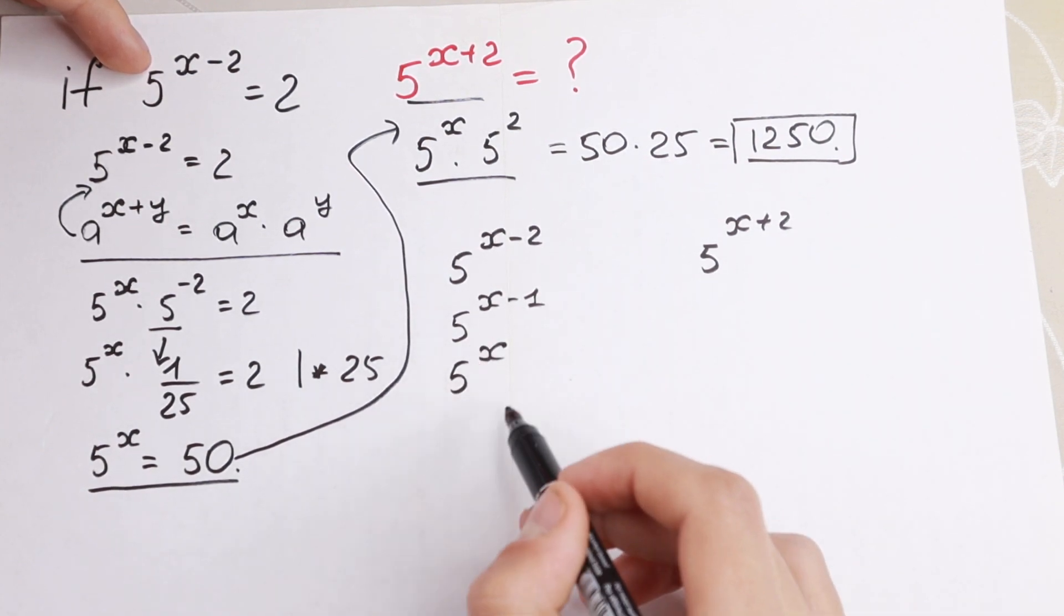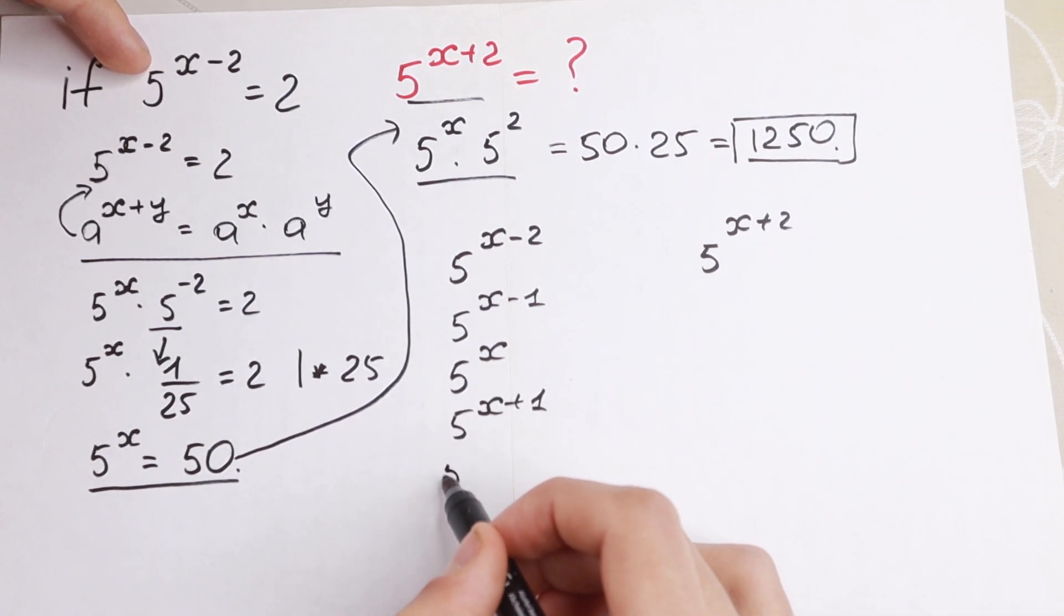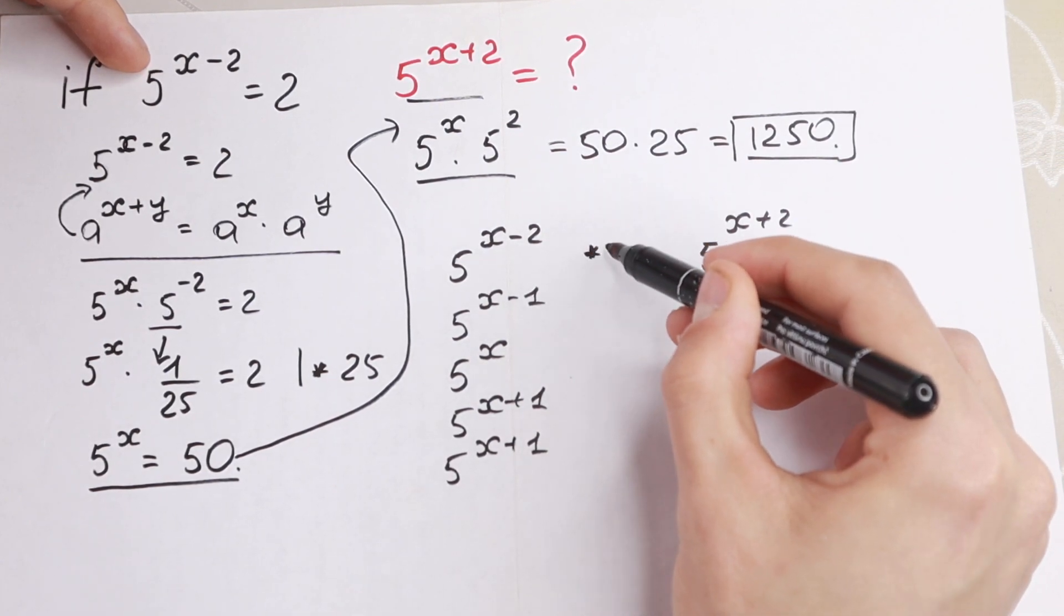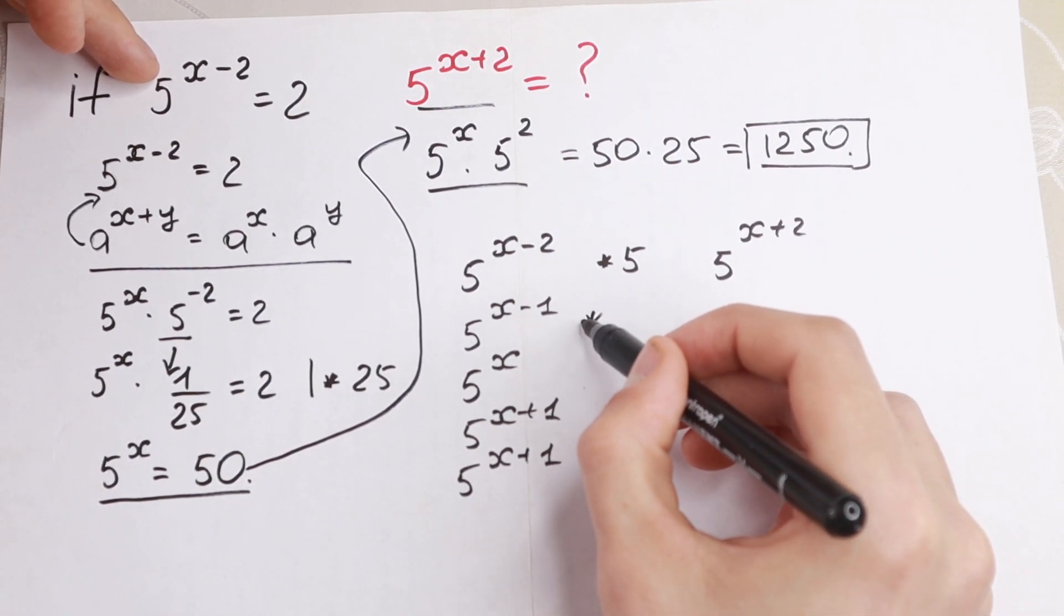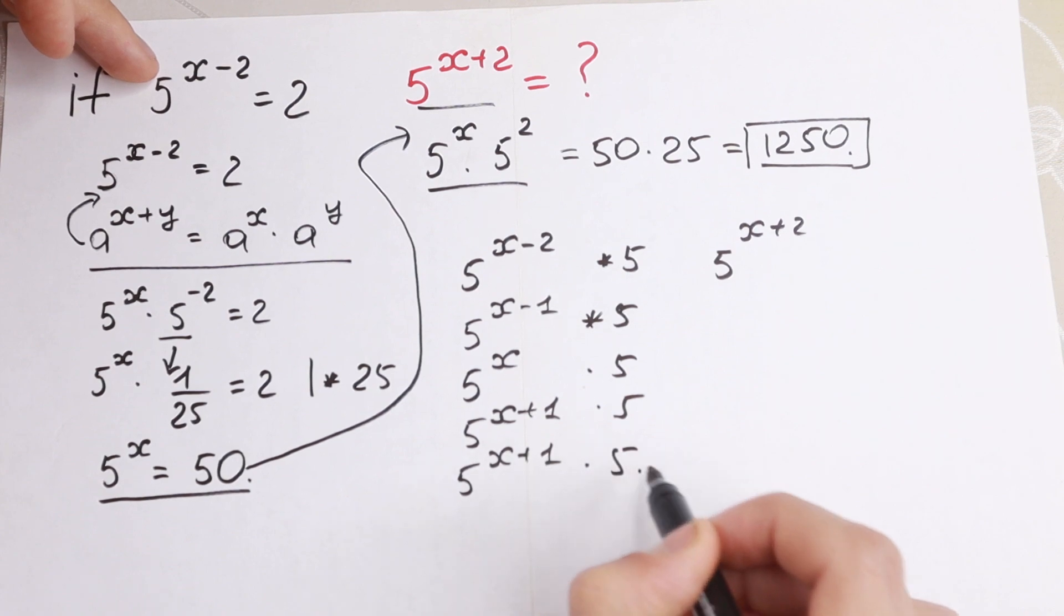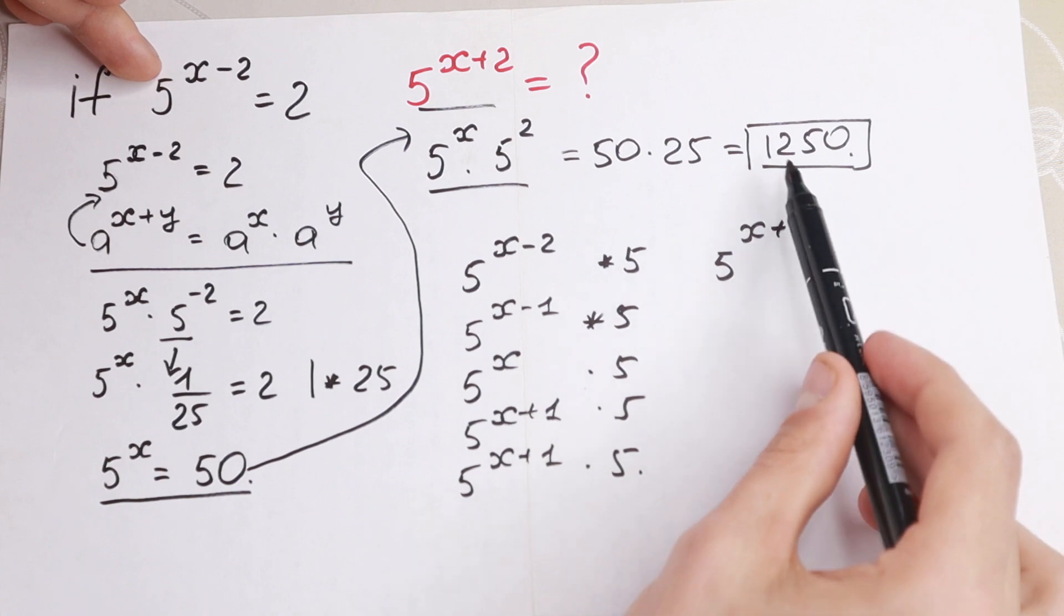If we multiply once more by 5, we will have 5 to the power x plus 1. And if we multiply once more, we will have 5 to the power x plus 2. So multiplying by 5, this is 2. Multiplying by 5 as well. And multiplying by 5, by 5, and by 5. And as you can see, if we multiply this using this logic step by step, we will have our answer.